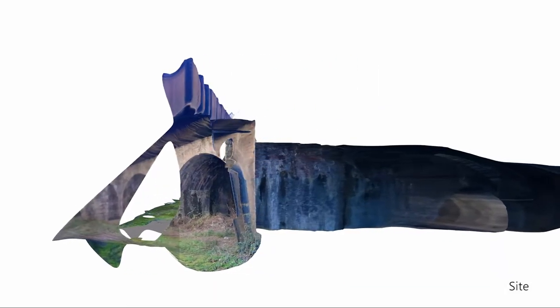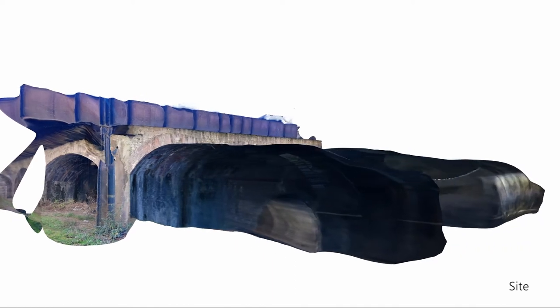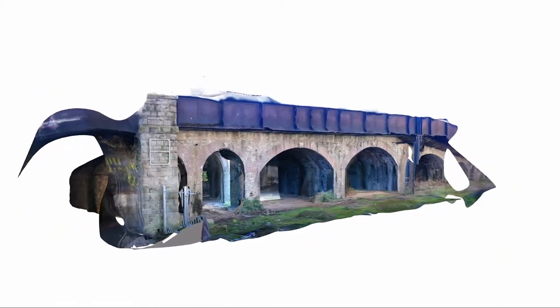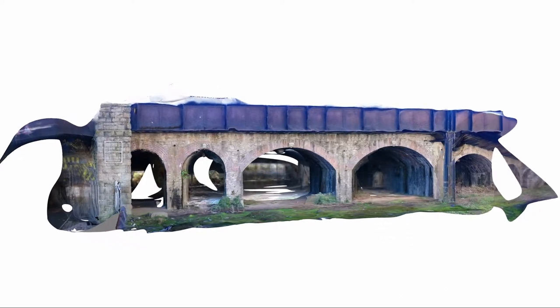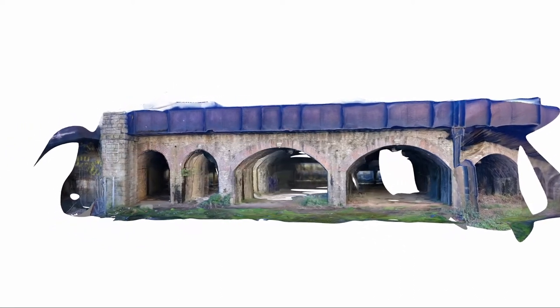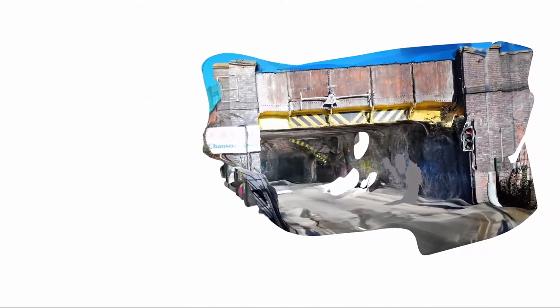So I started off looking at the site using ReCap, which is a photogrammetry tool, and just trying to see how the program would create a 3D space from just 2D photographs. And it led to using the same program, ReCap, to looking at film sequences and how a sort of collection of frames would be mapped into creating a 3D space of a certain scene.